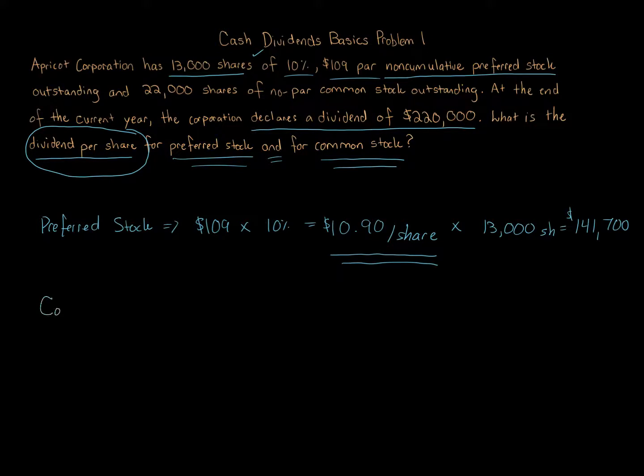Now to get the common, remember common dividend is always going to be residual. When you're calculating dividends, total amounts per share, you always do preferred first and the residual, whatever's left goes to the common shareholders. And if you're asked for a dividend per share amount, then we're going to get the total and divide that by the number of common shares outstanding. I want to write this down: we always use outstanding shares when we're calculating dividends.